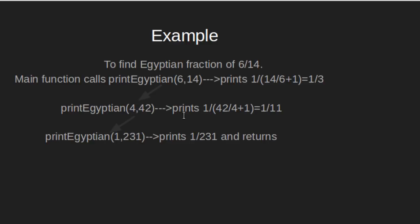Now, this prints 1 by 42 by 4 plus 1, which is 1 by 11. And now, this calls for the remaining portion, which is printEgyptian for 1 by 231. And now, this prints 1 by 231 and returns.